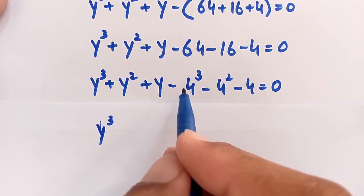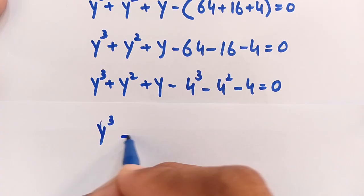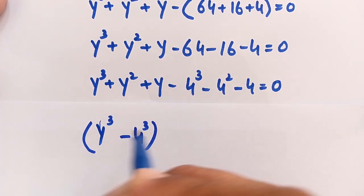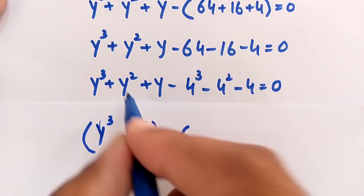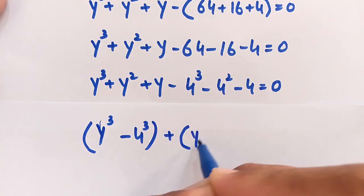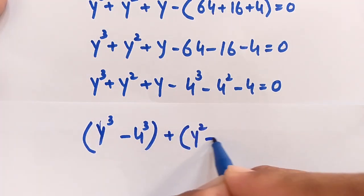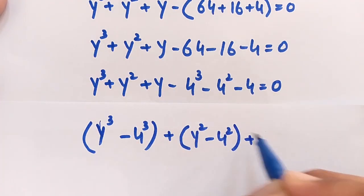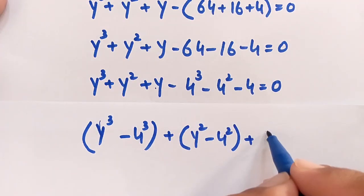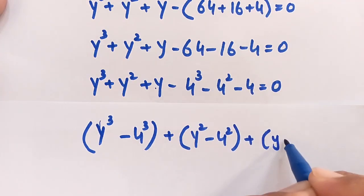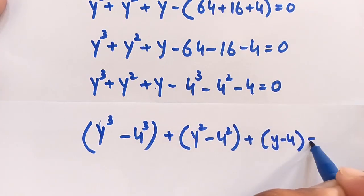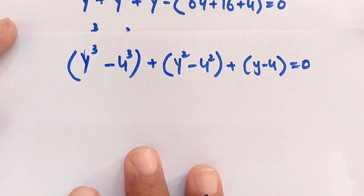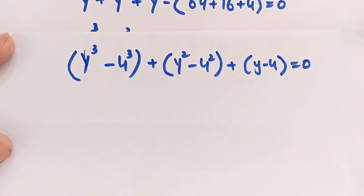We now have the expression: y³ minus 4 to the power of 3, plus y squared minus 4 squared, plus y minus 4, all equal to zero. We will apply algebraic identities to factor each of these grouped terms.